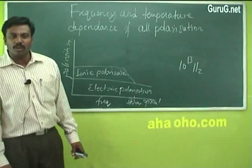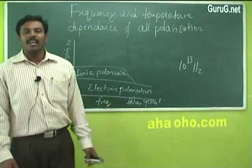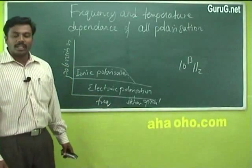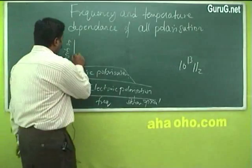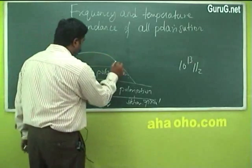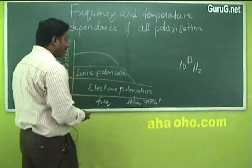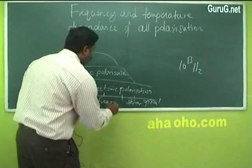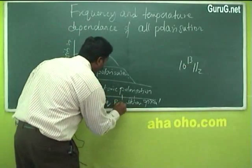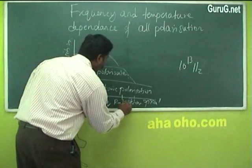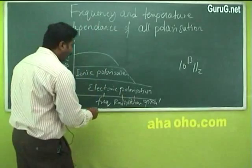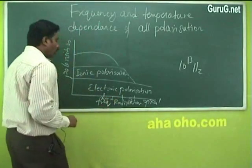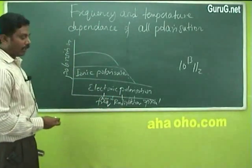Whereas in the case of solid crystals, orientation polarization is a bit slower compared to electronic and ionic polarization. So orientation polarization occurs in the region of radio and audio frequency region.